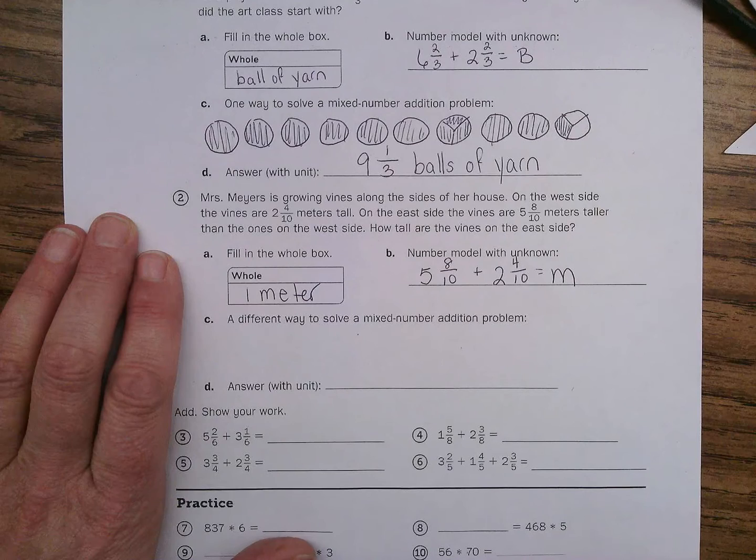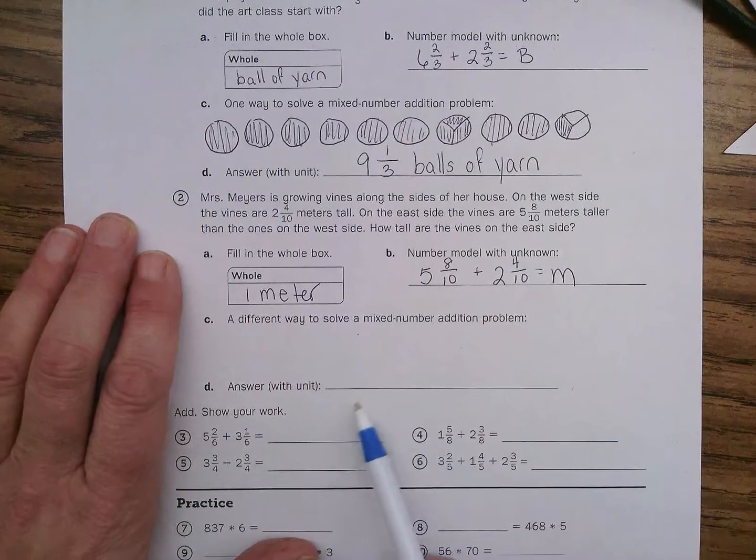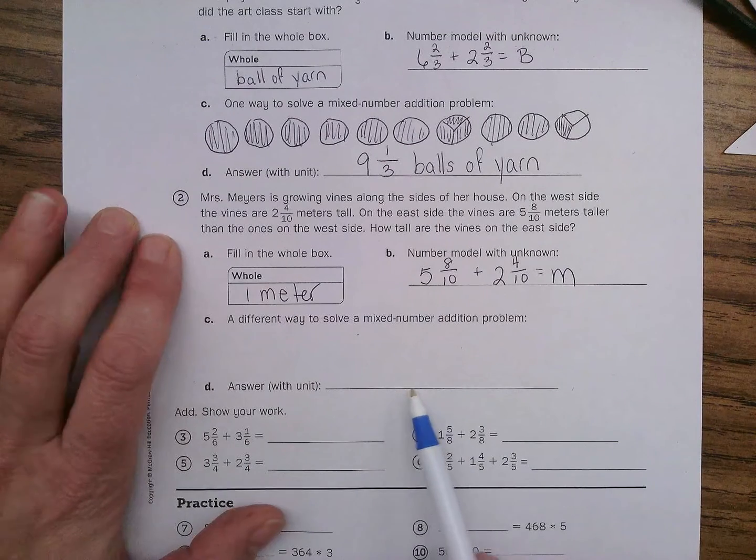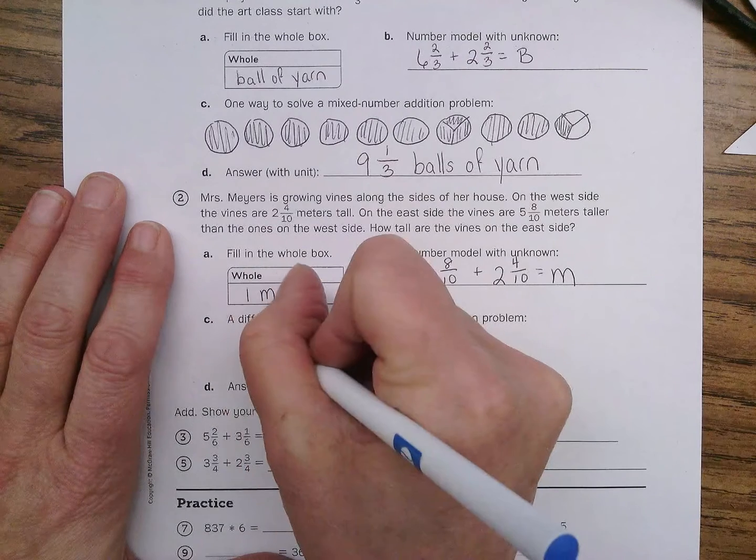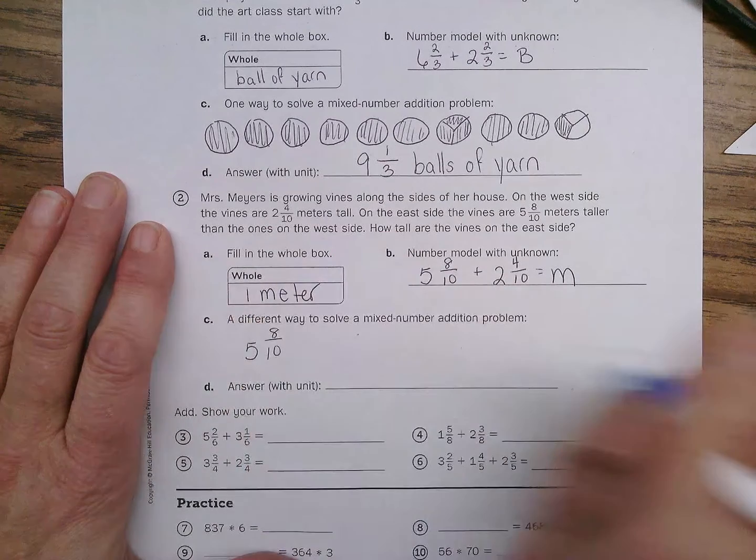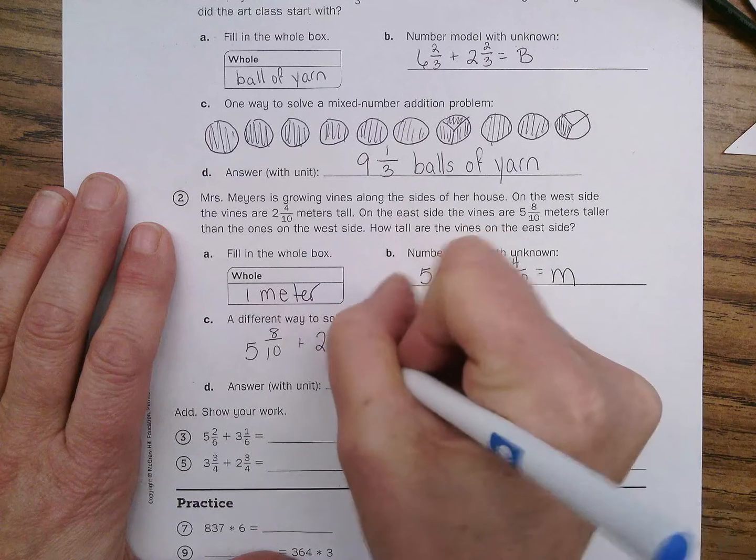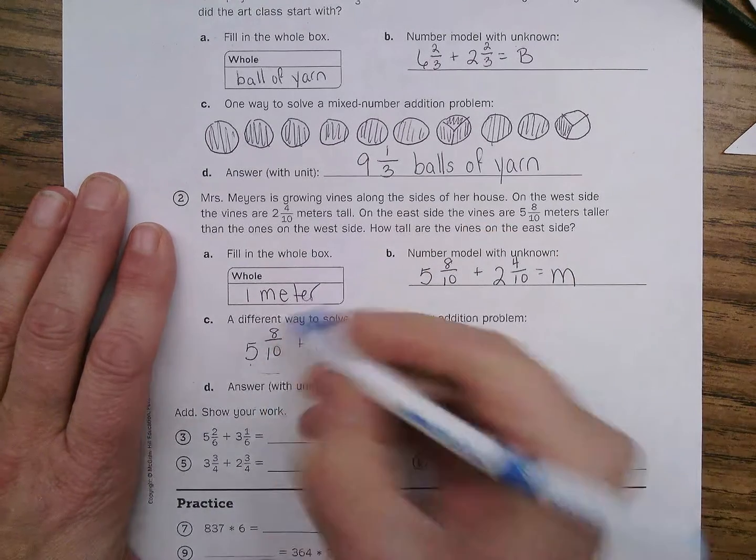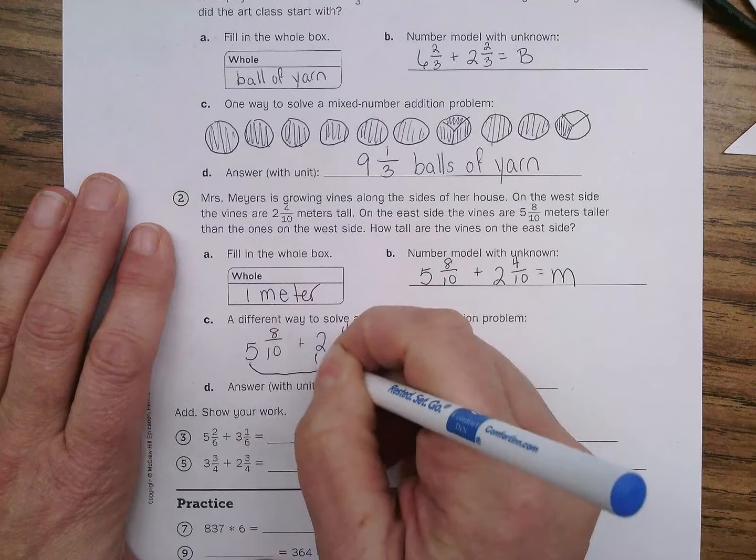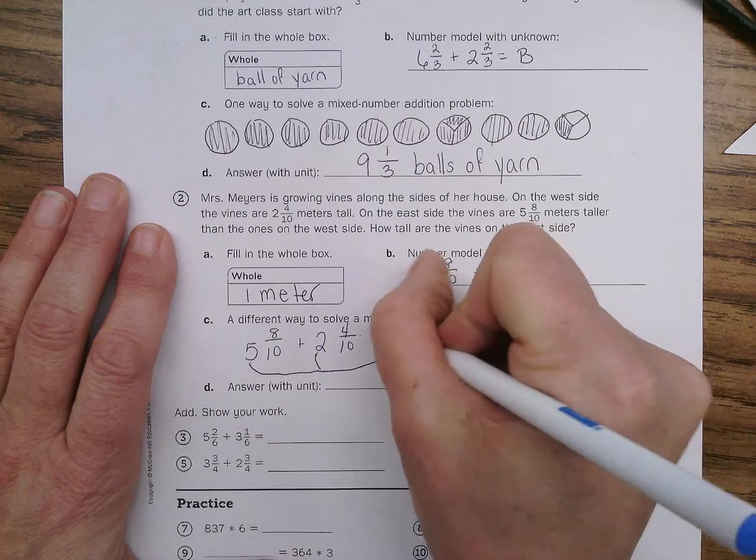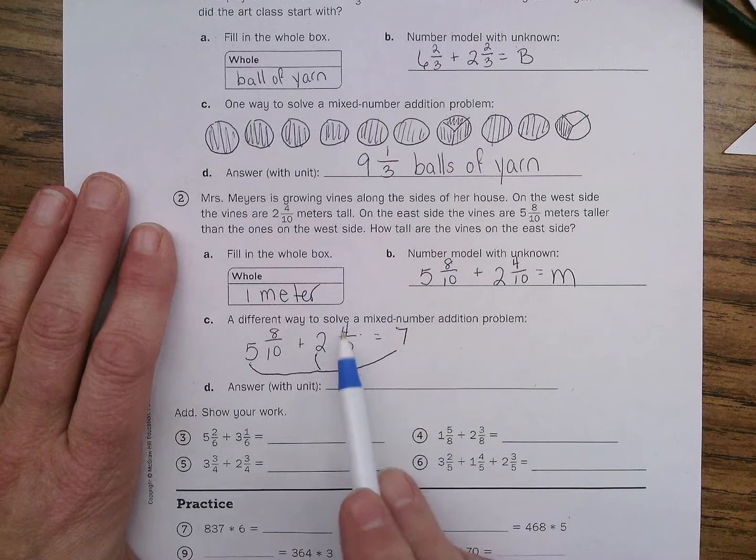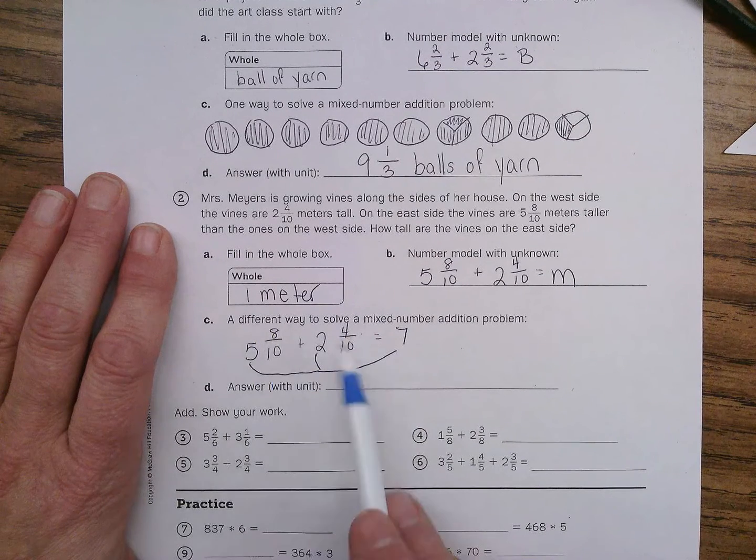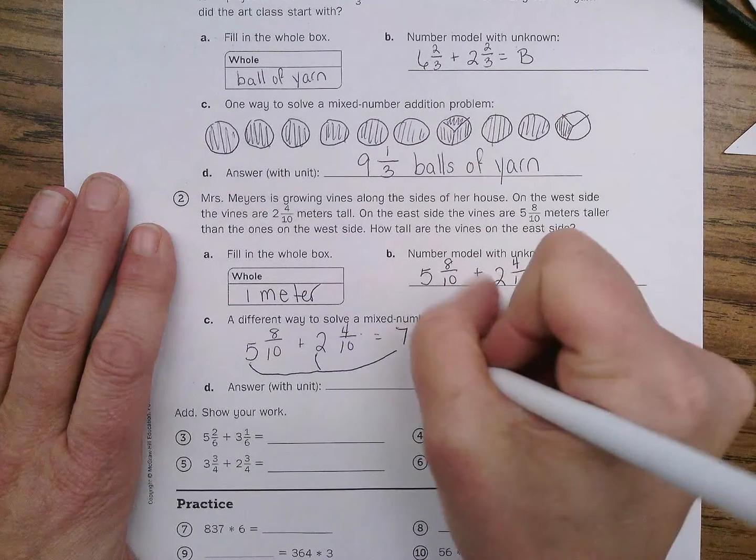Okay, so this time, instead of drawing pictures like we did up here, let's just add the numbers. Let's try that. So, five and eight-tenths plus two and four-tenths equals, well, five and two, add that together, and that equals seven, right? Five plus two is seven. And then eight plus four, eight plus four is twelve, seven and twelve-tenths.